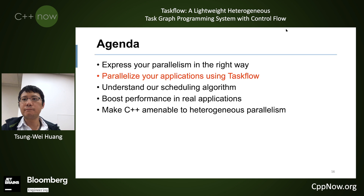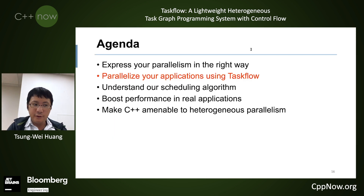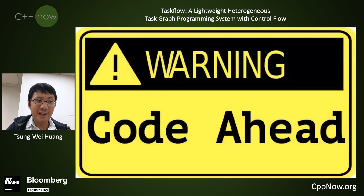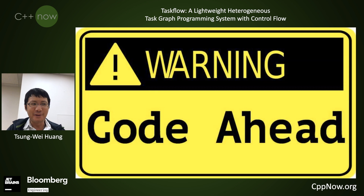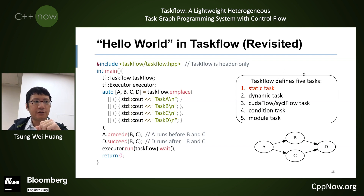Next, I'll show you how to use Taskflow to describe a parallel task graph. Taskflow defines five task types: static task, dynamic task, CUDA flow task or SYCL flow task for heterogeneous computing, condition task, and module task.